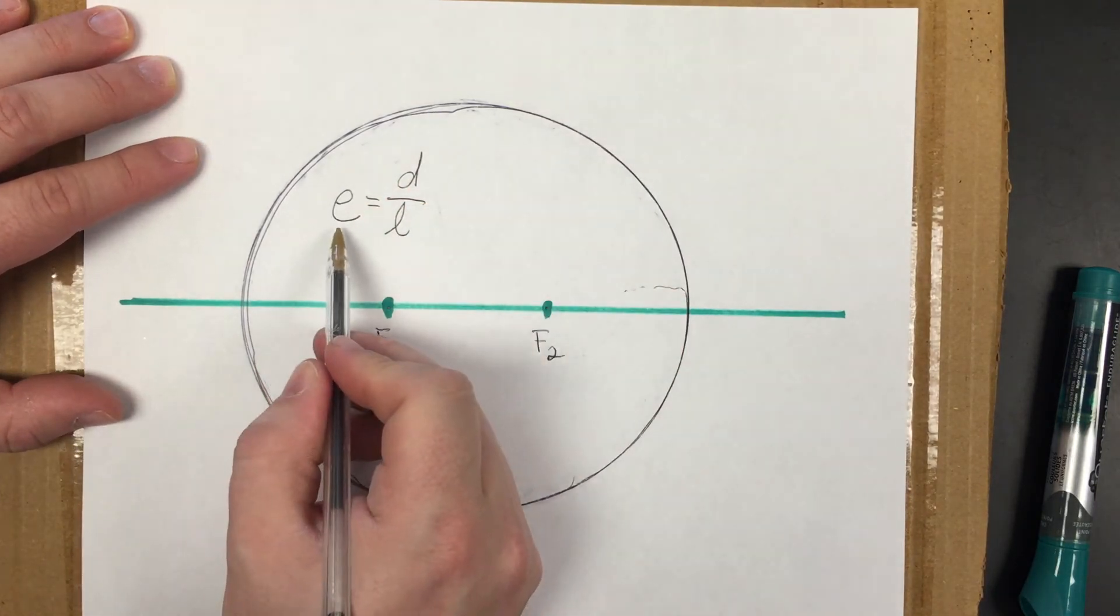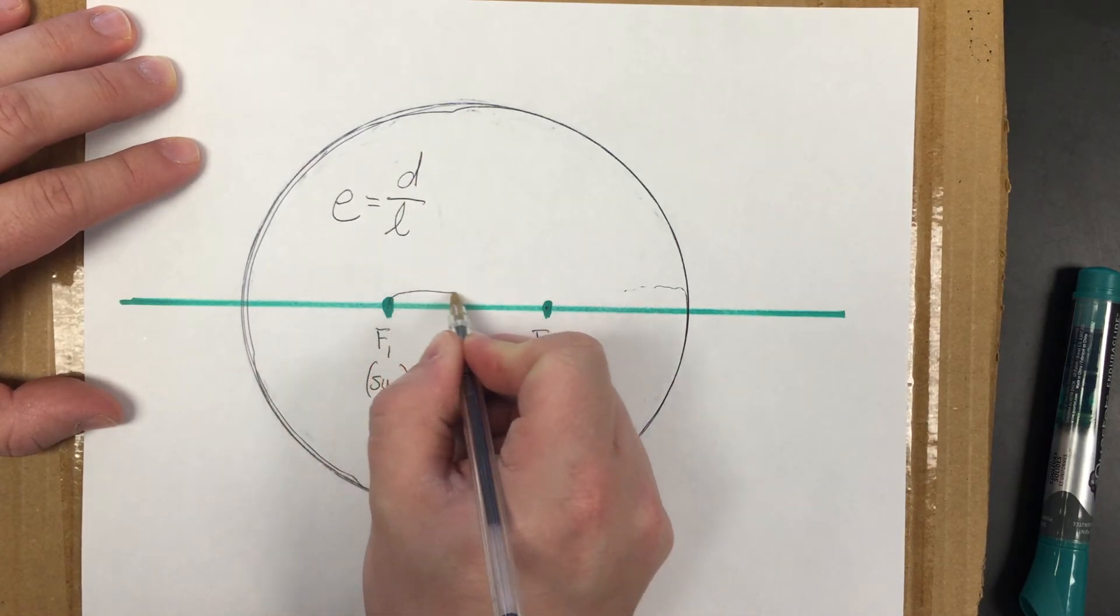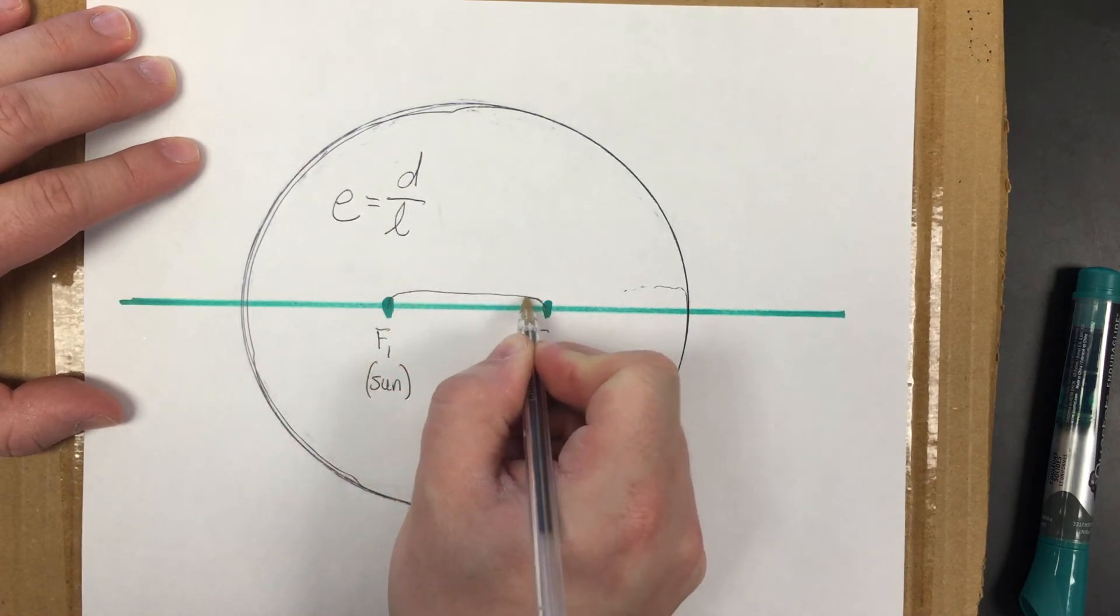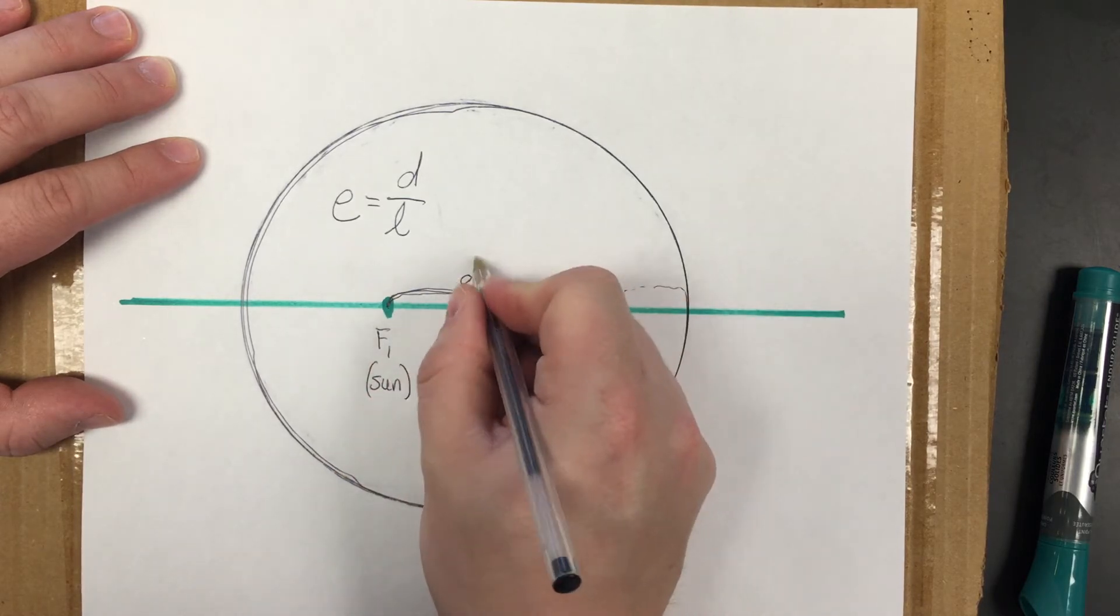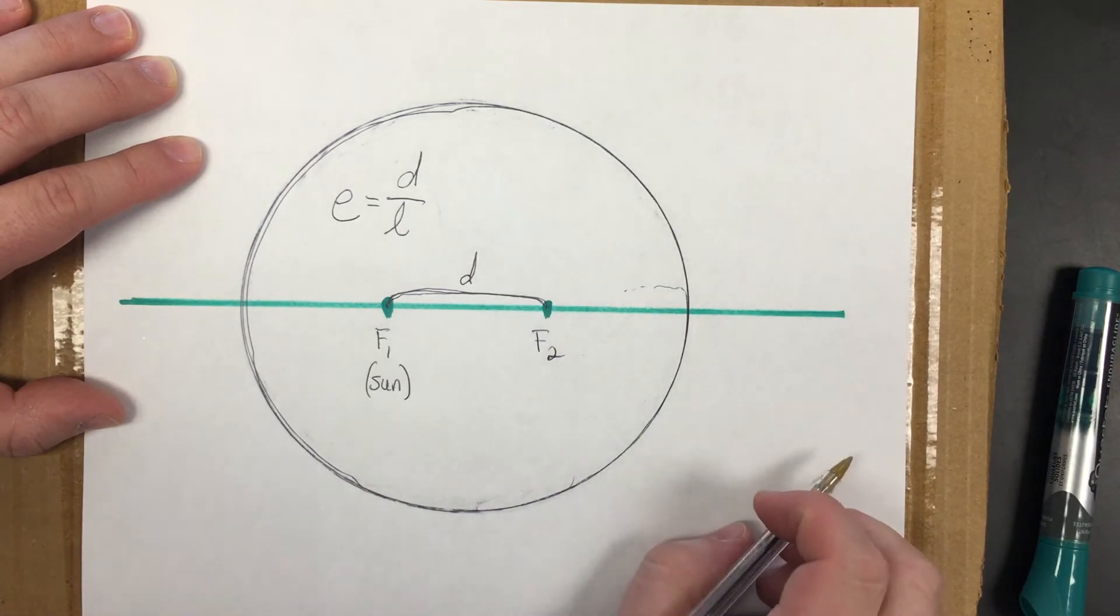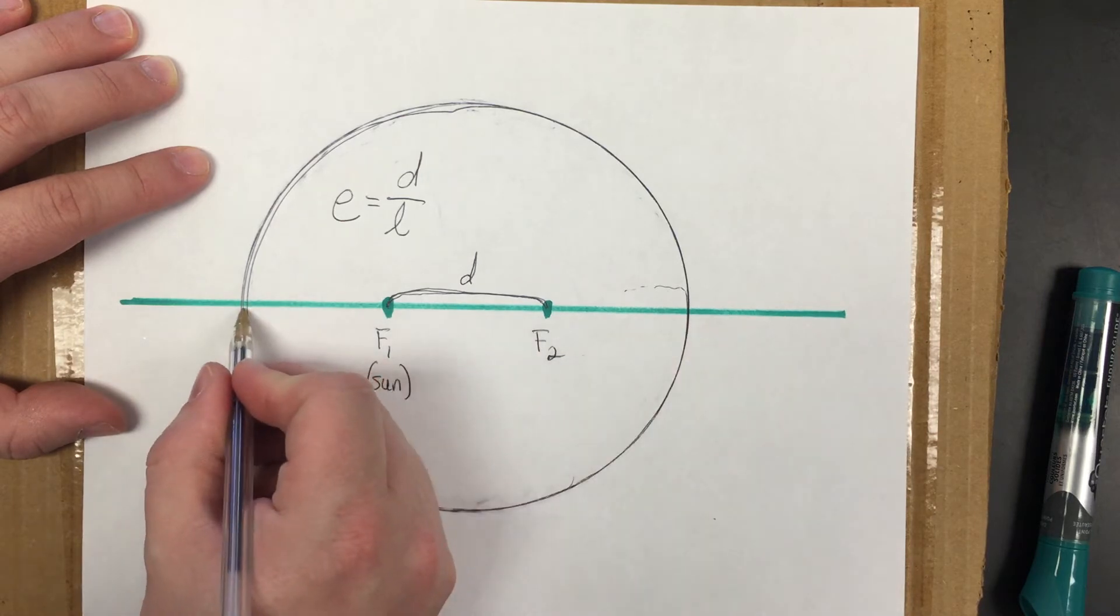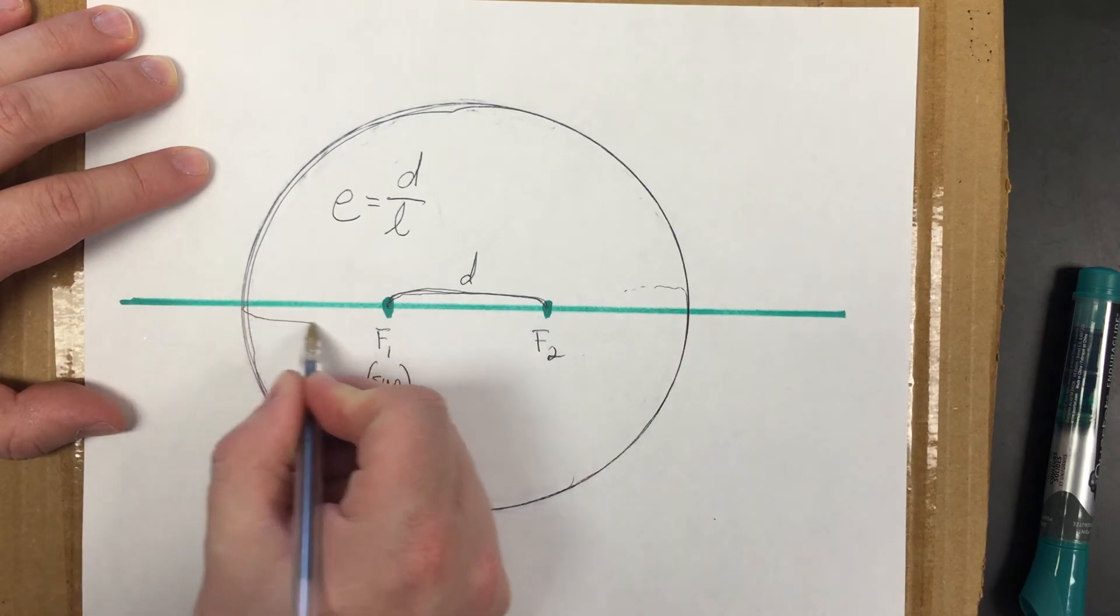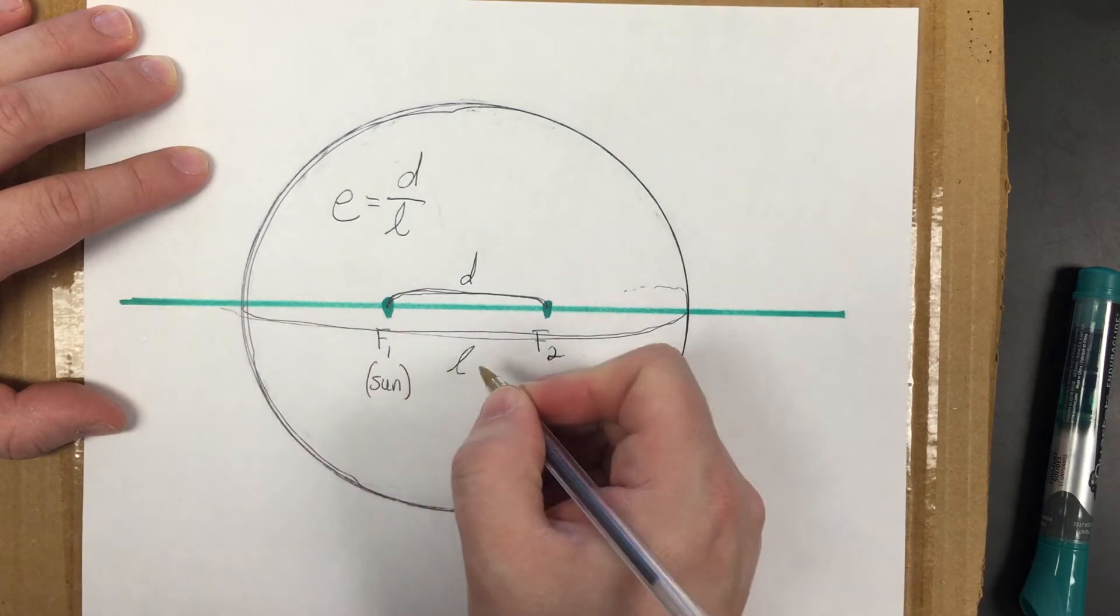E is going to be your eccentricity. D is your distance between the foci. This would be your D. And then L is the length of the major axis or the long way across. It's always going to be on the same line you had your two focal points. So L here would be this length of the major axis.